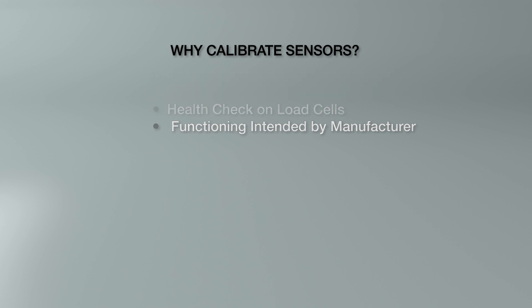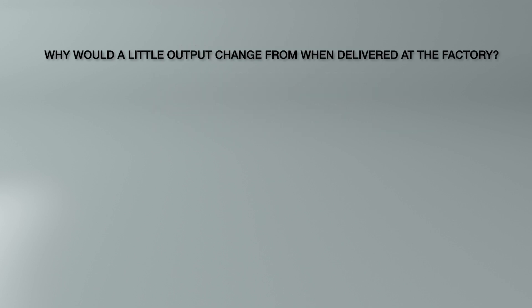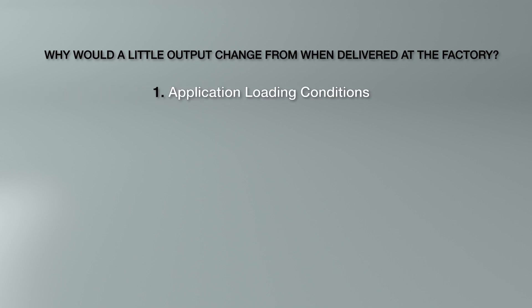Why would a load cell's output change from when it was delivered at the factory? Reason one: application loading conditions. If there's something inherent in the application that is causing the load cell to experience forces at or above the safe overall capacity of the cell, or a severe duty application with load cells being exercised very extremely, that could cause a shift in output.